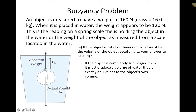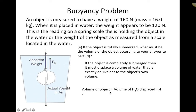The next question asks: if the object is totally submerged, what must be its volume? As the object is placed in the water, water spills out — the more of the object submerged, the more water displaced. The volume of fluid displaced must exactly equal the volume of the object. So if the object is completely submerged, it displaces a volume of water equal to its own volume, meaning the volume of the object is 4 liters.